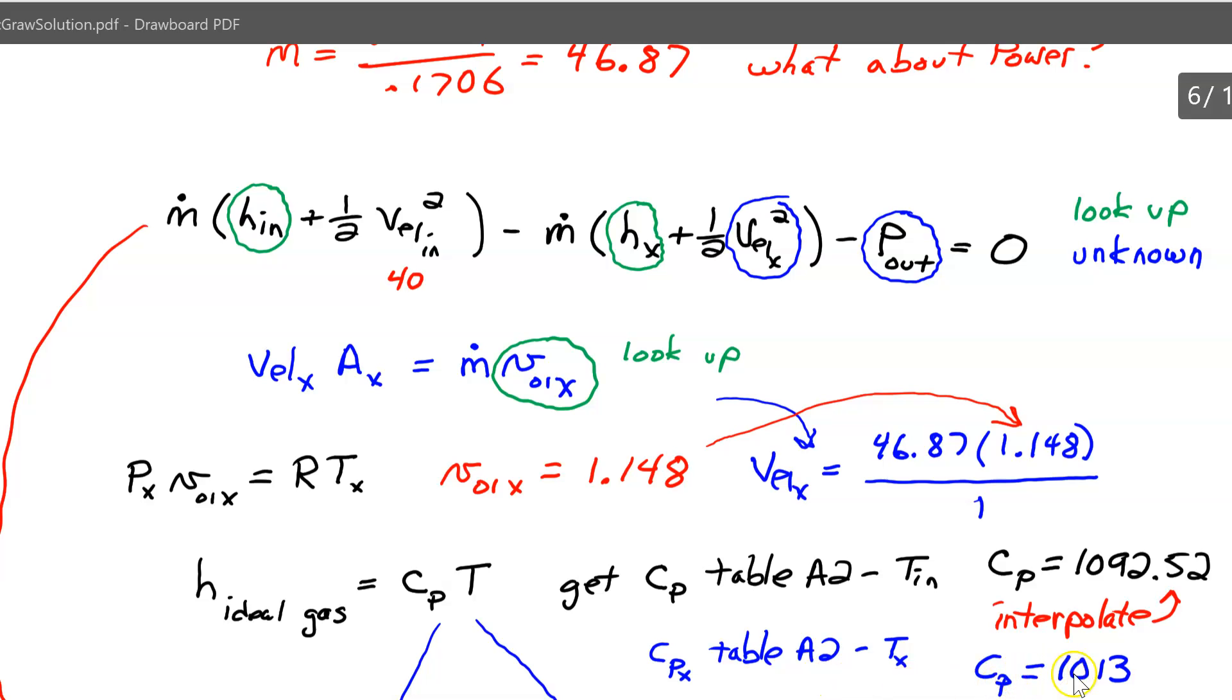Okay, so we're back to the problem. This is 1013. I got that out of the table. Okay, so now with the c_p, you can come over and get the h for the inlet and you can get the h for the exit. So the only thing that's left then is to take this energy equation right here, plug in all the numbers that you know, and calculate the power that comes out.